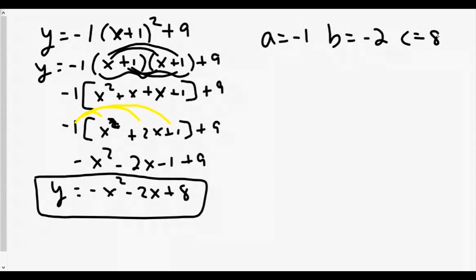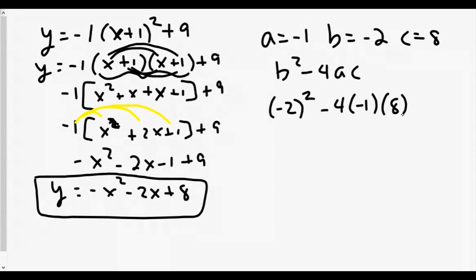Our discriminant formula is B squared minus four AC. Plugging in: negative two squared minus four times negative one times eight. Make sure you put parentheses around everything. For calculator users, parentheses will give you the correct answer. Without a calculator, be careful — negative two squared is positive four, not negative four. Then negative four times negative one is positive four, times eight is 32, so plus 32.